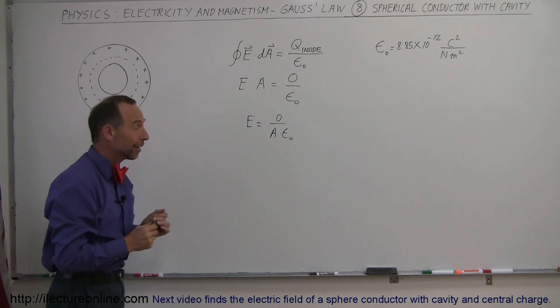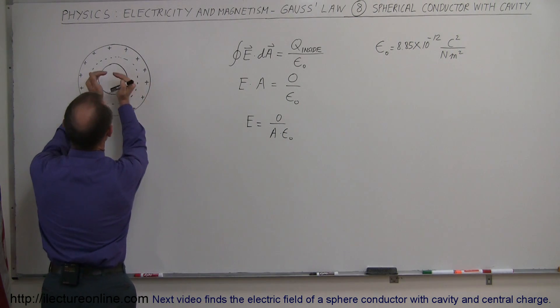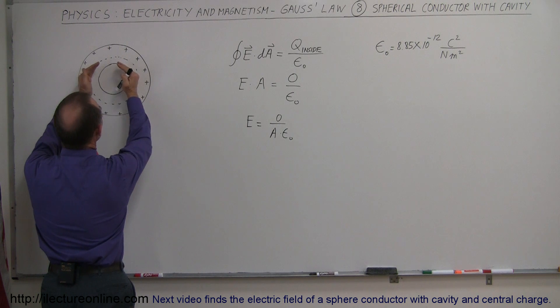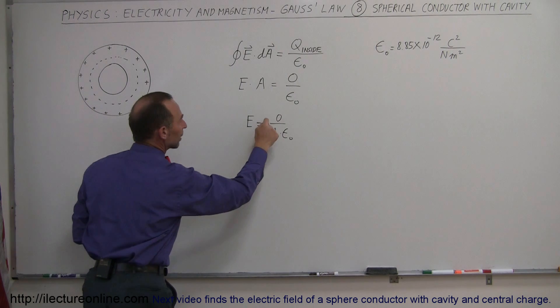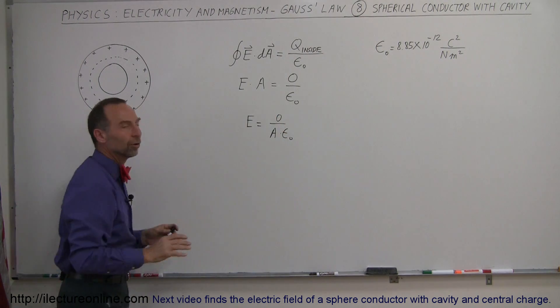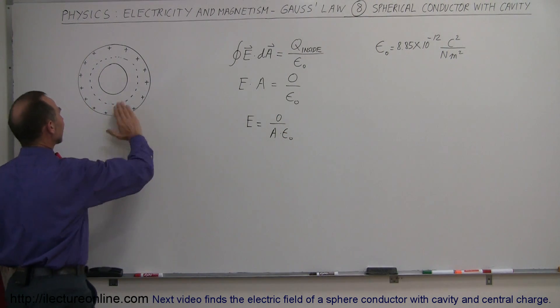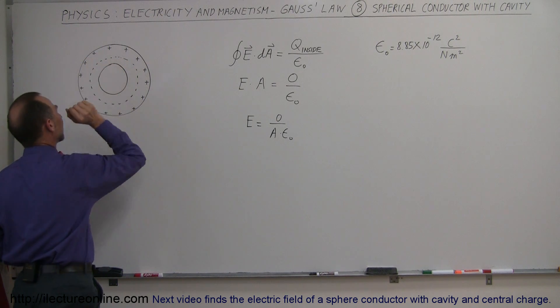It doesn't matter how big the area of the Gaussian surface is. It could be inside the cavity, it can be including the cavity all the way out to the edge of the conductor here. The electric field always will be equal to zero. So there's no electric field inside the conductor whether or not there's a cavity in there or not.